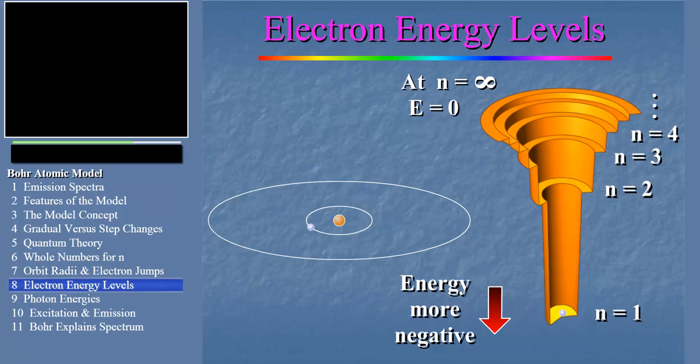We can cause the electron to jump from orbit one to orbit two by absorbing a photon of just the right energy. Notice the electron jumps up to orbit two in the picture on the left, and it jumps up to the higher energy step in the well on the right. The electron can then fall back down again by emitting an identical photon.